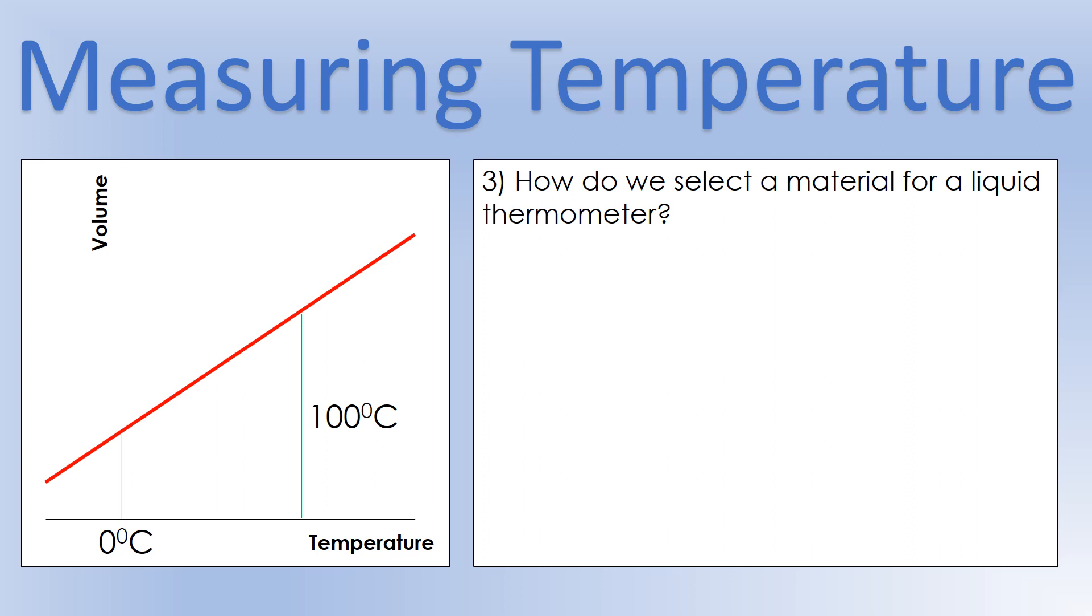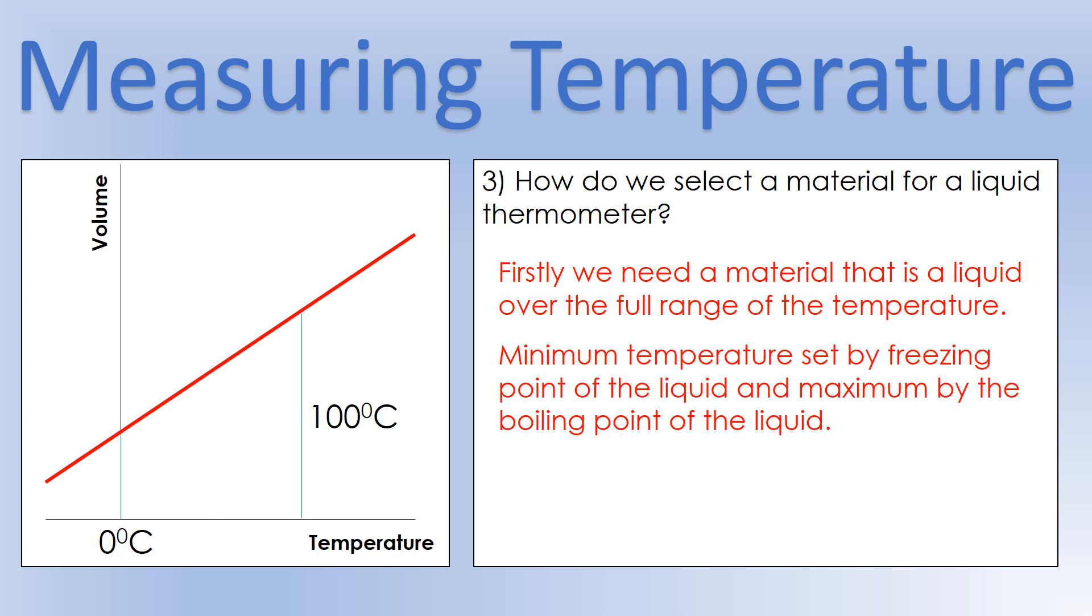Next, how do we pick a material for a liquid thermometer? Well, the key is we want the graph of volume versus temperature to look like something on the left. But there's also something else we need to bear in mind. We need to make sure that over the range of temperatures we want to measure, that the material stays a liquid. So, for example, for a liquid, we need to think about two points. It's freezing point or it's boiling point. So those will set the maximum and minimum temperatures that we can use.